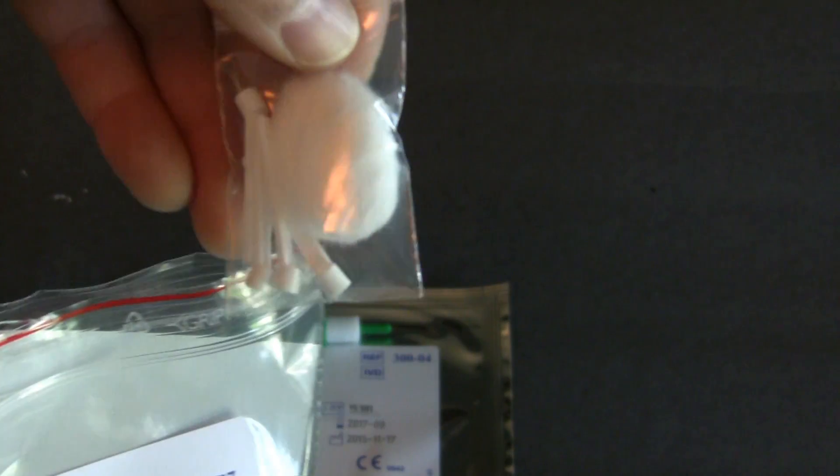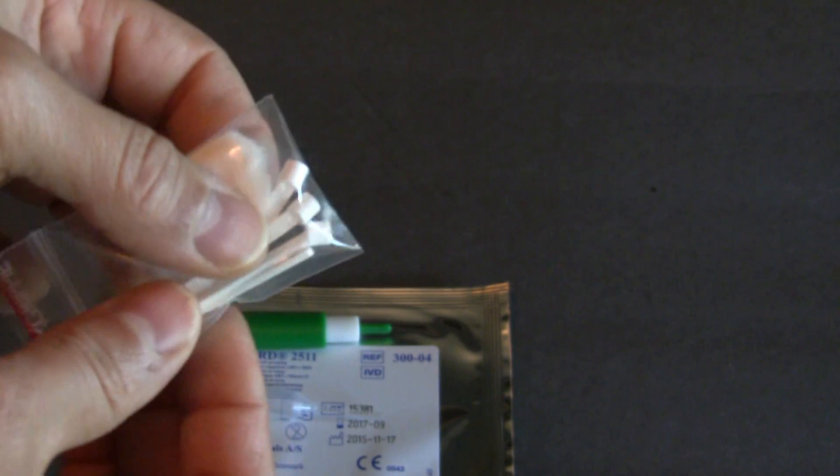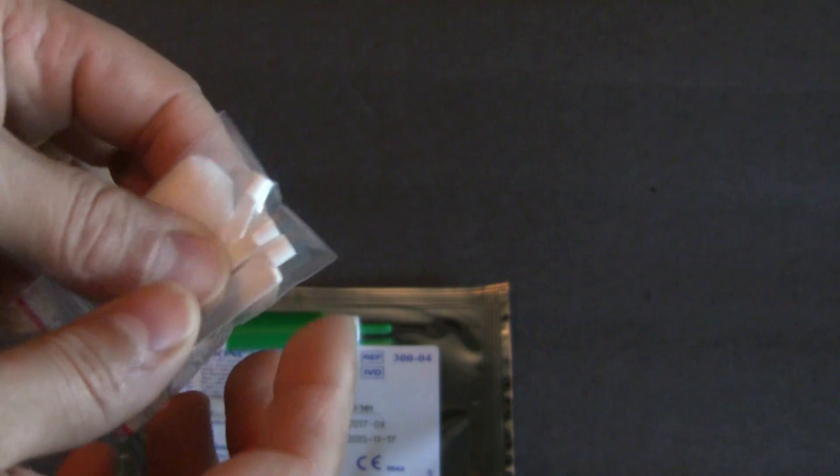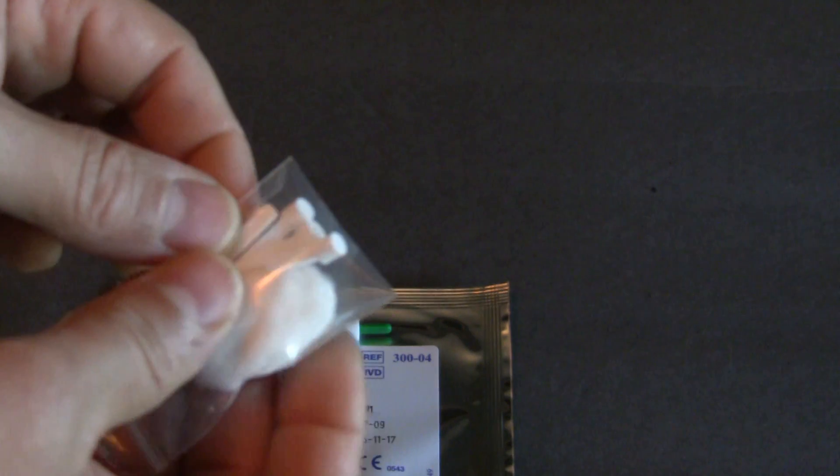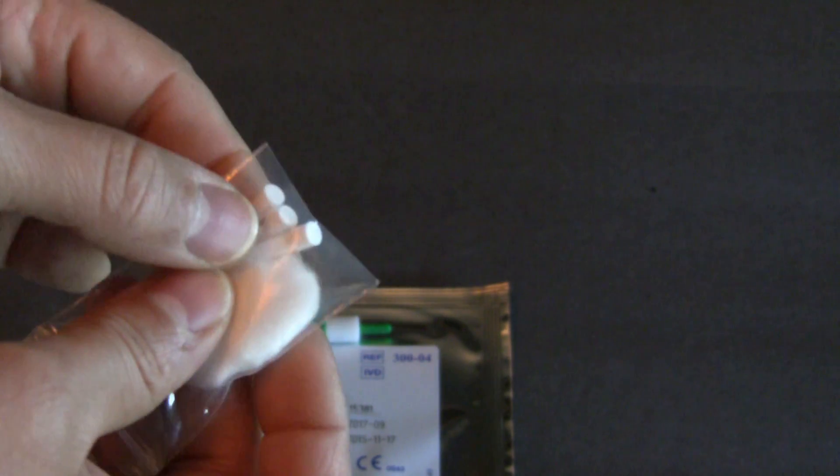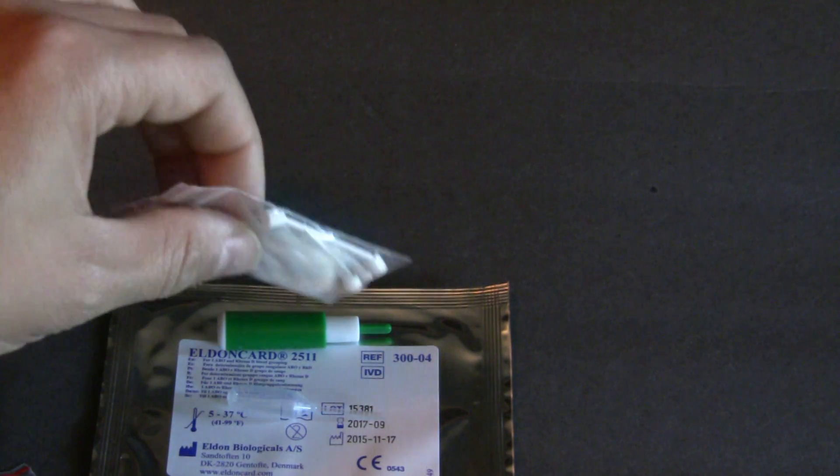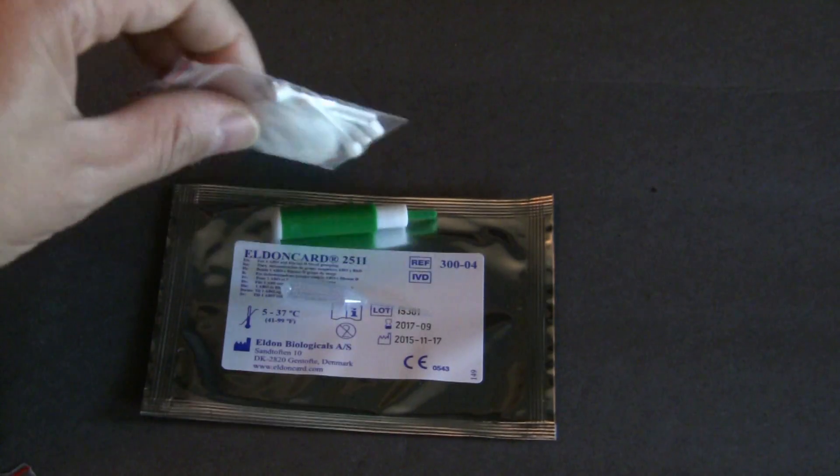Comes with a cotton swab and four Eldon sticks. So the deal with these Eldon sticks is you're going to put the blood, once you prick your ear or your finger, you're going to put the blood on top of the Eldon stick and you're going to lay that down on the Eldon card.